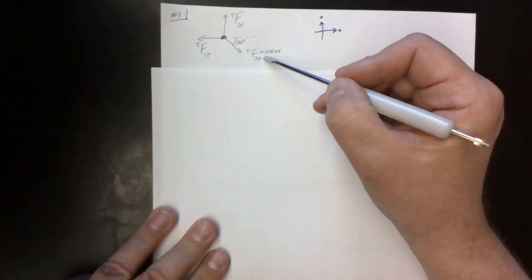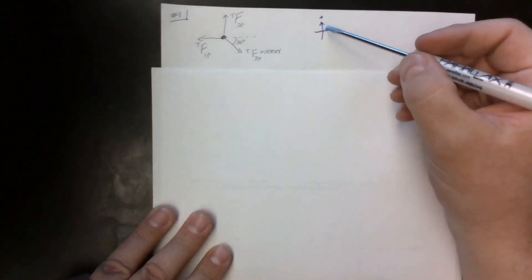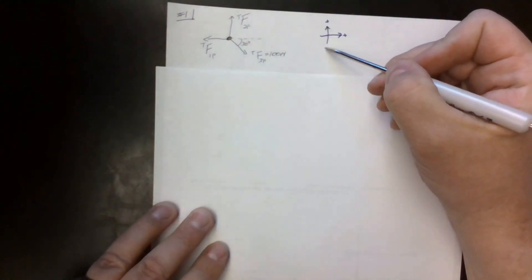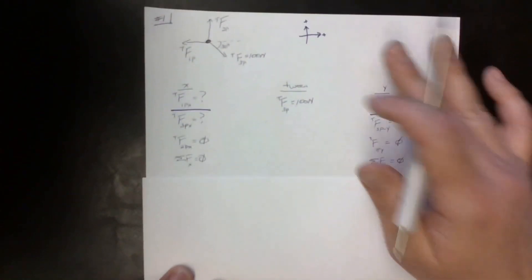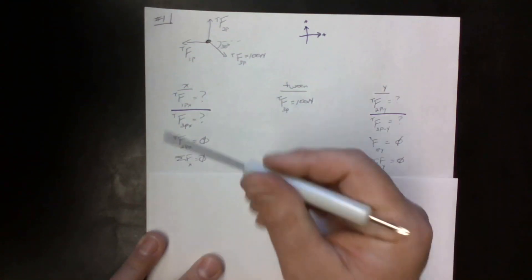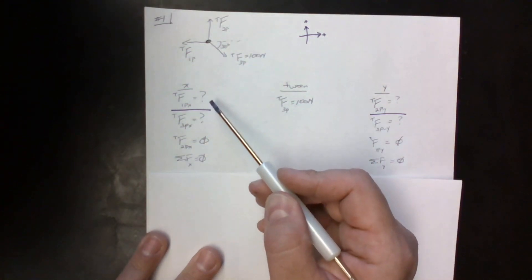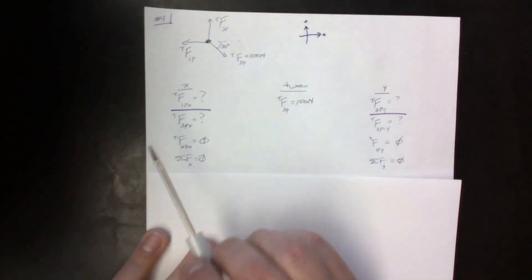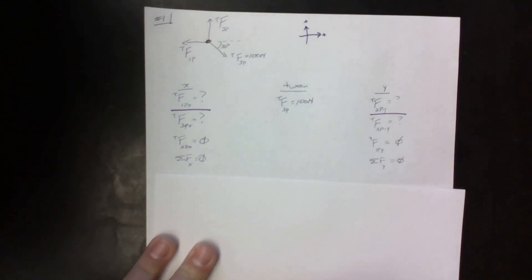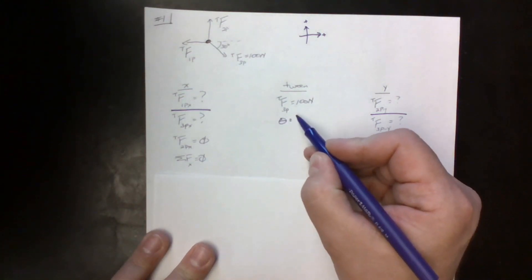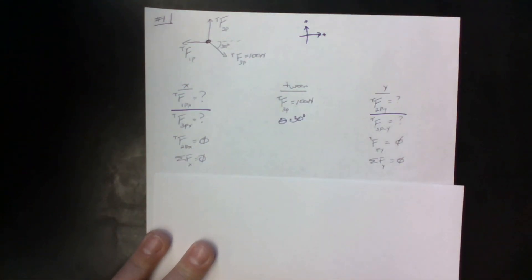The problem tells us that rope three has a tension force of 100 newtons. I'm choosing up to be positive, down negative, to the right positive, and to the left negative. As I go through and look at the variables for this problem in the x direction, the only real value we know is the tension of rope three — and theta equals 30 degrees.